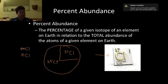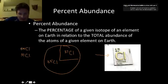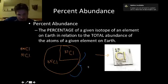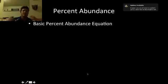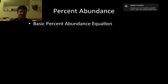So this circle represents all chlorine on Earth. We can do a certain set of calculations when we understand what percent abundance is.